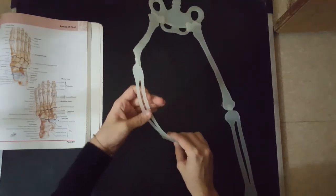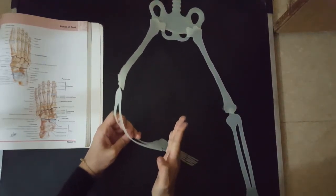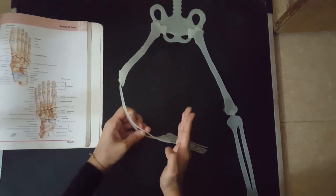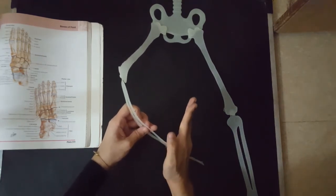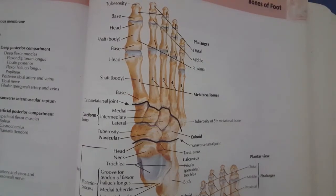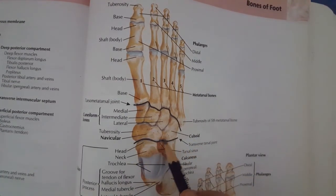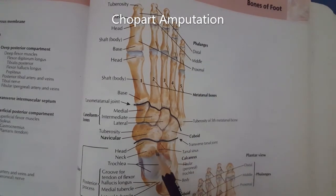Moving a step downward, if you place the foot like this and chop it off so that the heel is left — the talus and calcaneal bones are left but the tarsal bones have been amputated — then this is called Chopart amputation. The foot of our skeleton is not very accurate, so we have moved to this atlas. This amputation was between the talus and calcaneal bones and the tarsal bones.